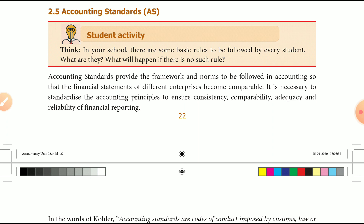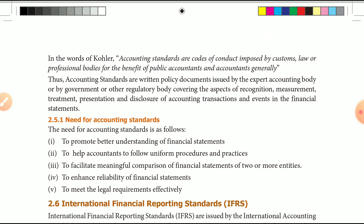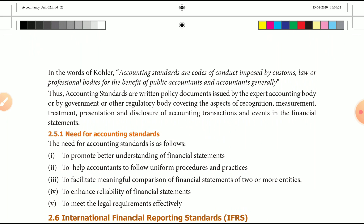Accounting standard is a definition of rules and regulations. If you have a standard — match, fulfill, and be flexible — then it is called an accounting standard. Accounting standards or codes are imposed by customs, law, and professional bodies for the benefit of public accountants generally. A person who acts according to the actions of the accountant at a tight level, as a guide, is called an accounting standard.